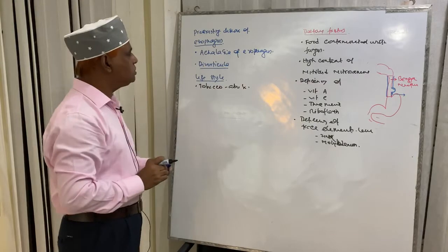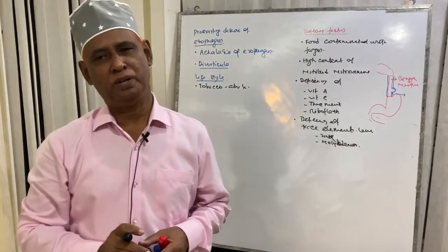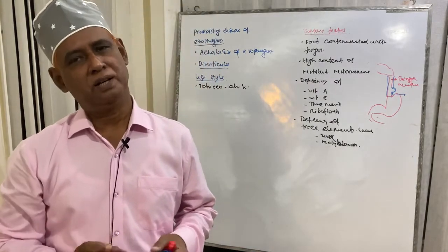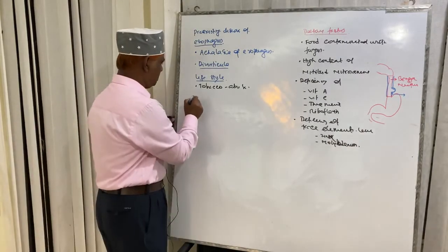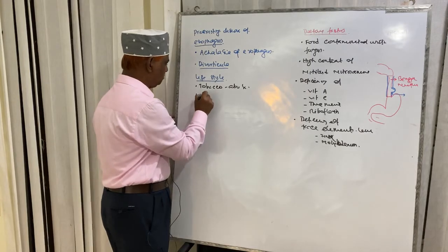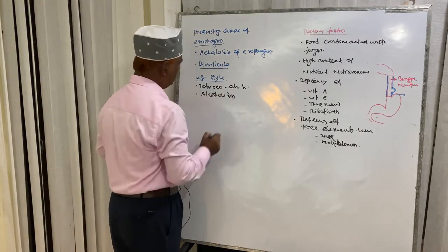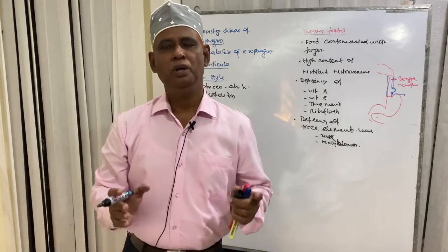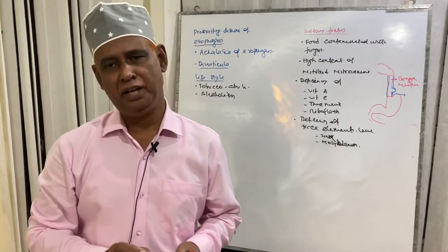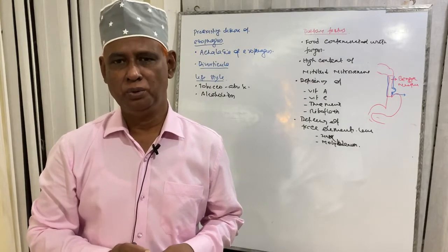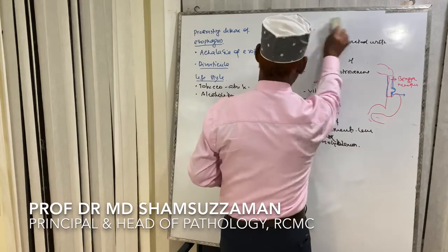Tobacco abuse is associated with carcinoma of the oral cavity, carcinoma of the esophagus, and carcinoma of the stomach. Alcoholism is also associated with esophagitis and may lead to esophageal squamous cell carcinoma.